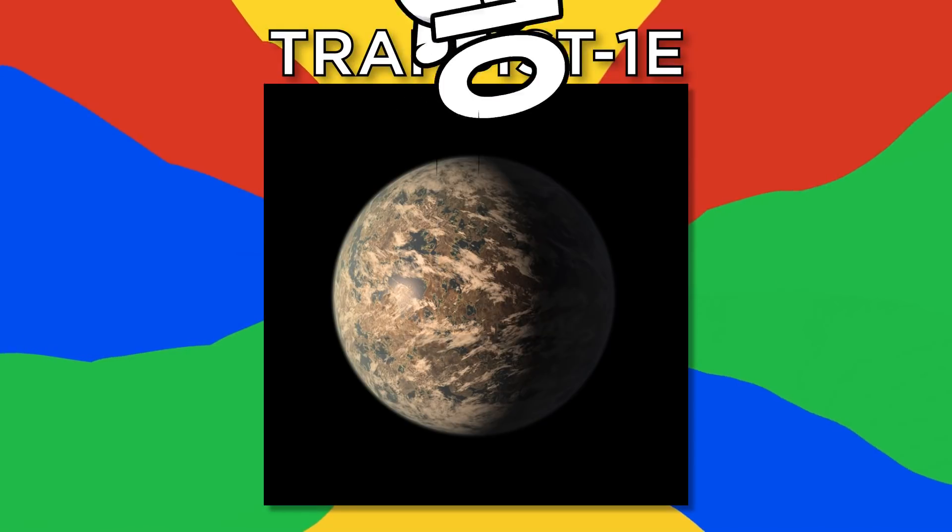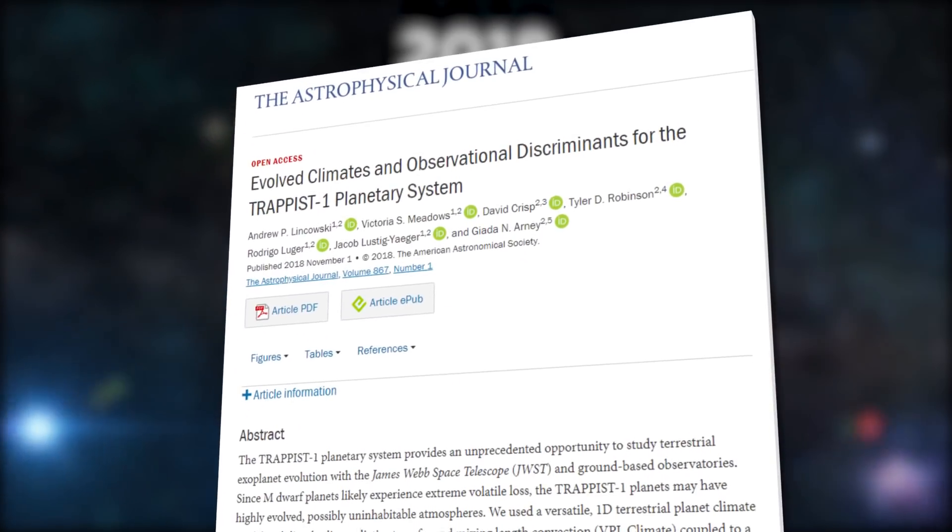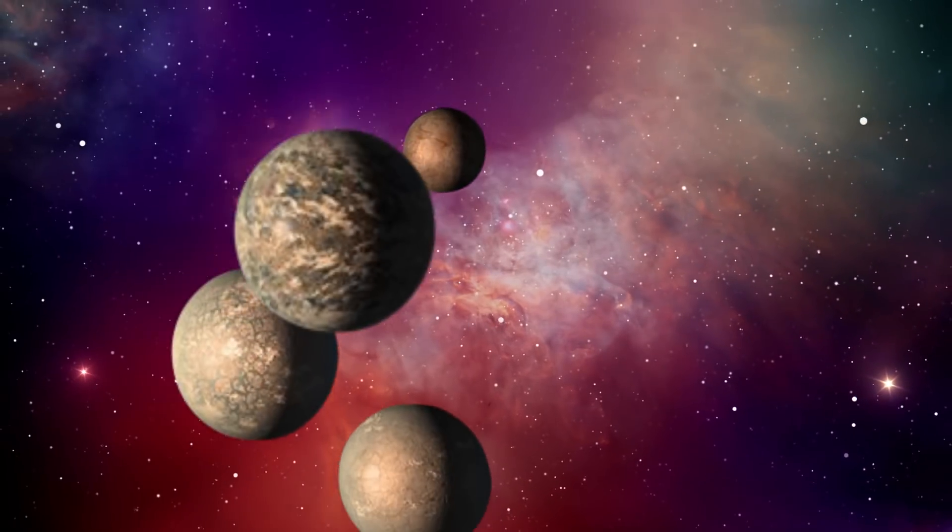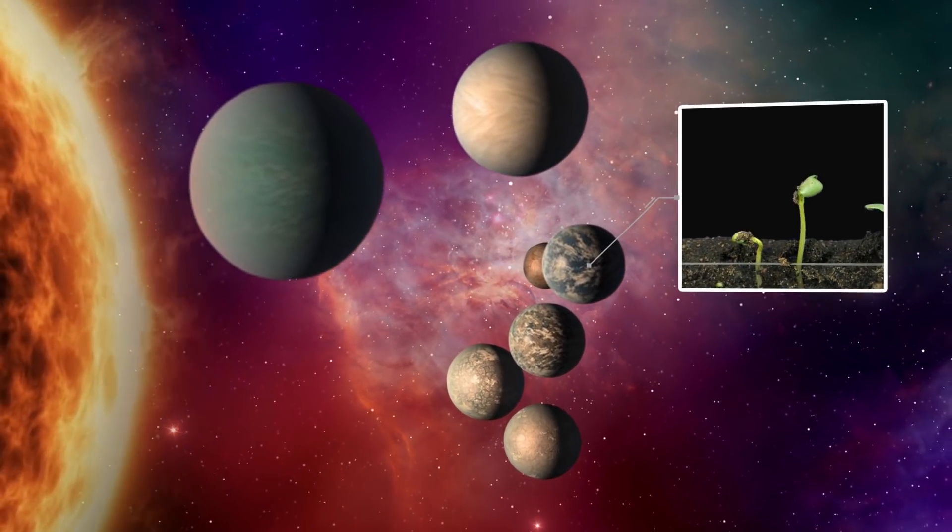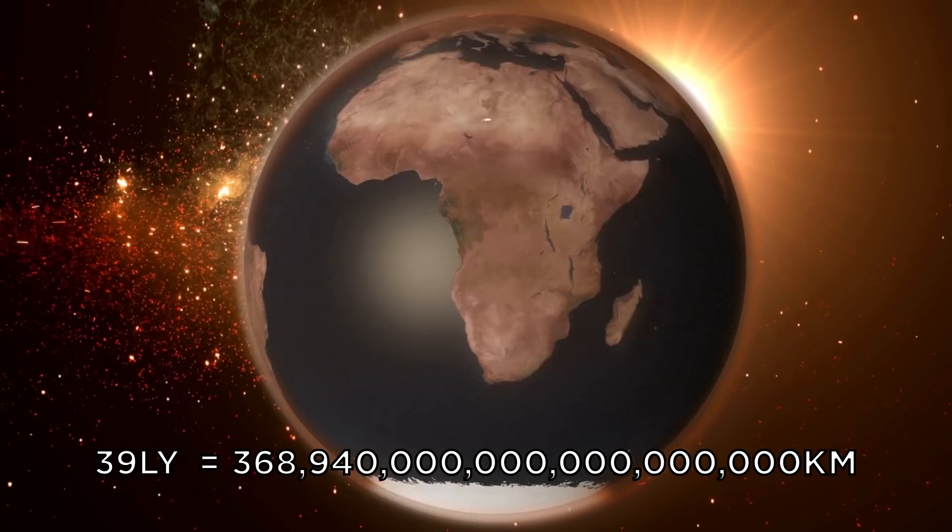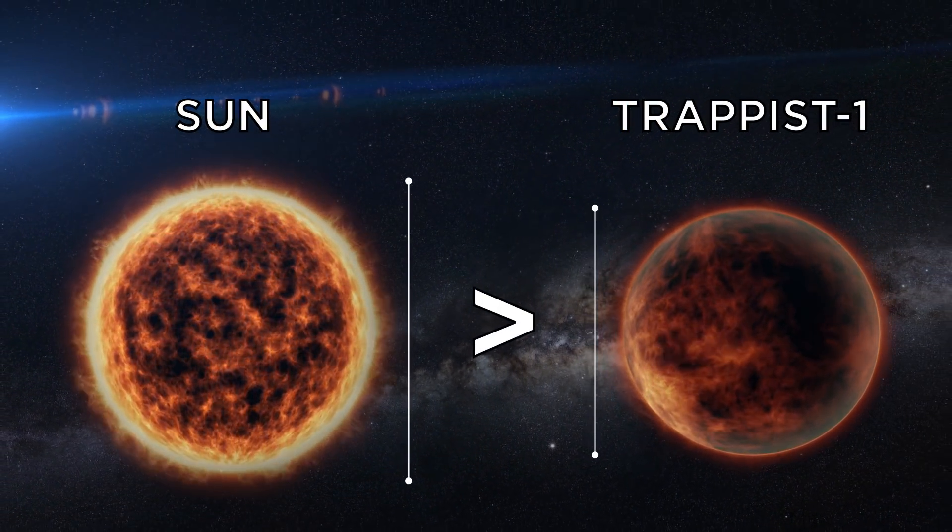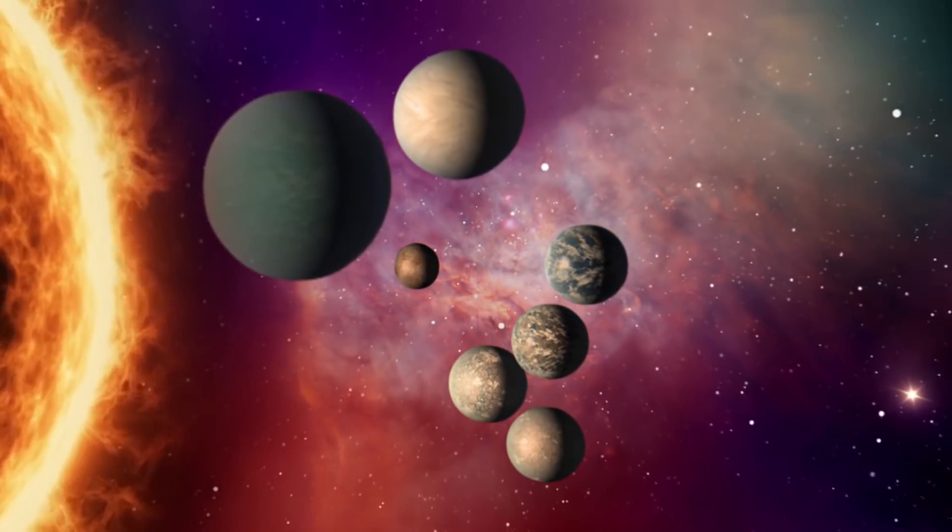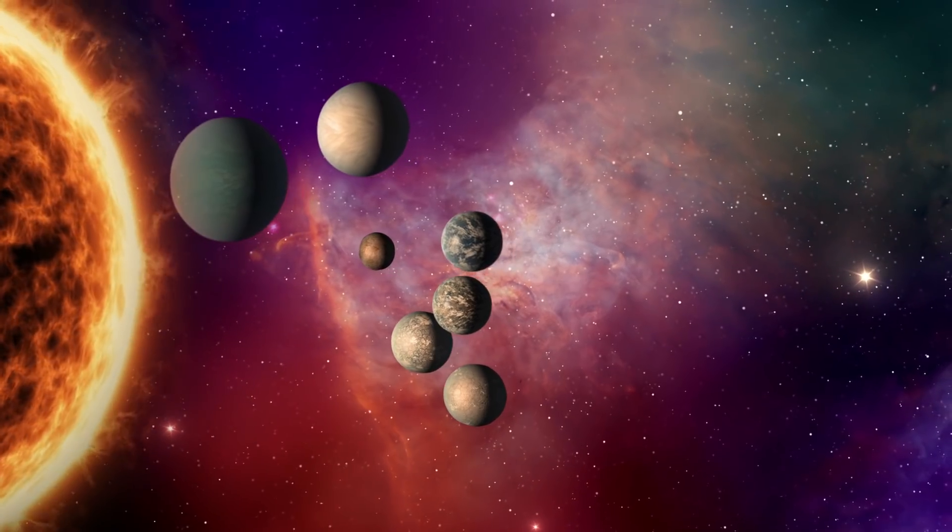Number 10, TRAPPIST-1e. In November 2018, a study published in the Astrophysical Journal noted how one of the planets orbiting the TRAPPIST-1 star may be capable of supporting life on Earth. Located 39 light-years, or 368.94 trillion kilometers away from Earth, TRAPPIST-1 is smaller than the Earth's sun in both mass and radius. But what's most interesting is that it has seven rocky planets that are more or less the size of Earth.